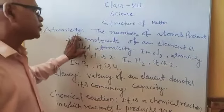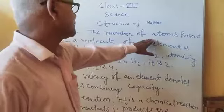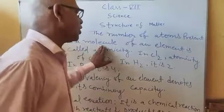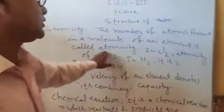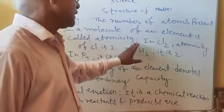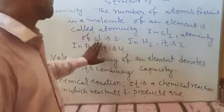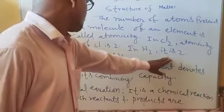Atomicity. Atomicity is the number of atoms present in a molecule of an element is called atomicity. In Cl2, atomicity of Cl is 2. In H2, it is 2.